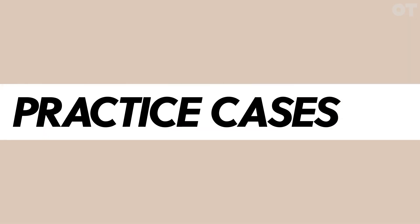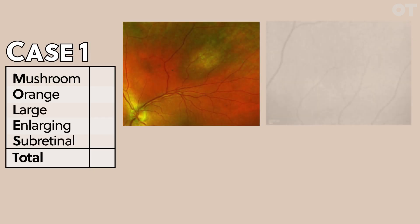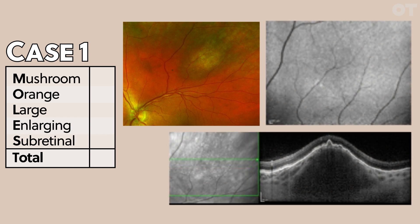Let's go through a few practice cases. This first lesion is partly amelanotic — it has an amelanotic centre with a pigmented ring. It is not mushroom shaped; on the OCT it's dome shaped, so it scores zero for M. It has no orange pigment — nothing's shining brightly on autofluorescence and no orange pigment on the colour photograph, so O is zero. It scores one for large size because the thickness is between one and two millimetres. There's no evidence of enlargement and no subretinal fluid on OCT or ophthalmoscopically. So this scores a total of one — a low-risk nevus.